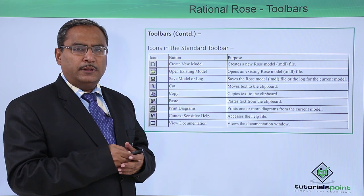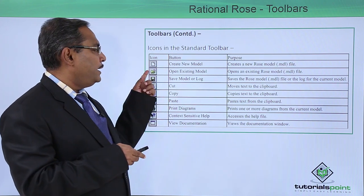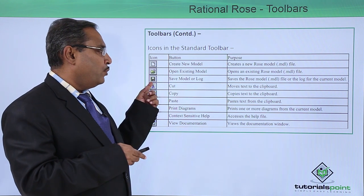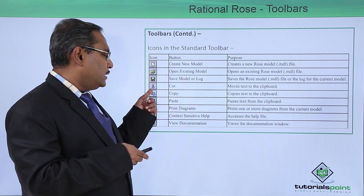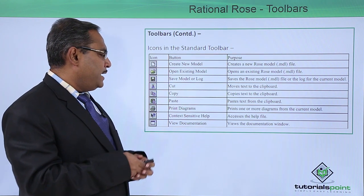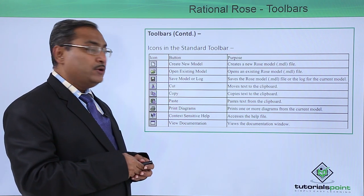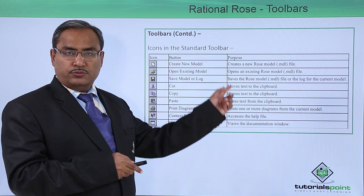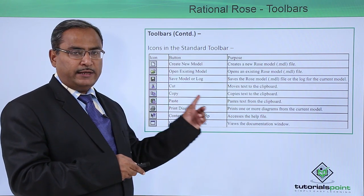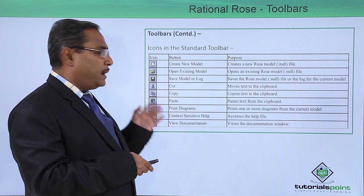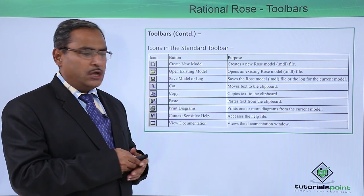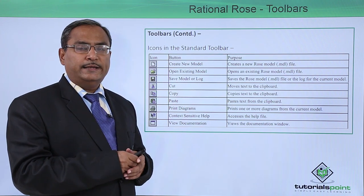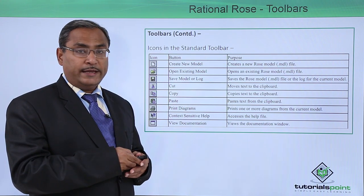Here you can find that we are having multiple icons, like you create a new model, there is an open existing model, save model or log, cut, copy, paste, print diagrams, context sensitive help and view documentation. For better understanding we have also written the respective purpose so that you can get the idea of what is the purpose of these respective icons. If you put your mouse pointer on those icons the tooltip will come which will give you the idea what is the purpose of that icon.